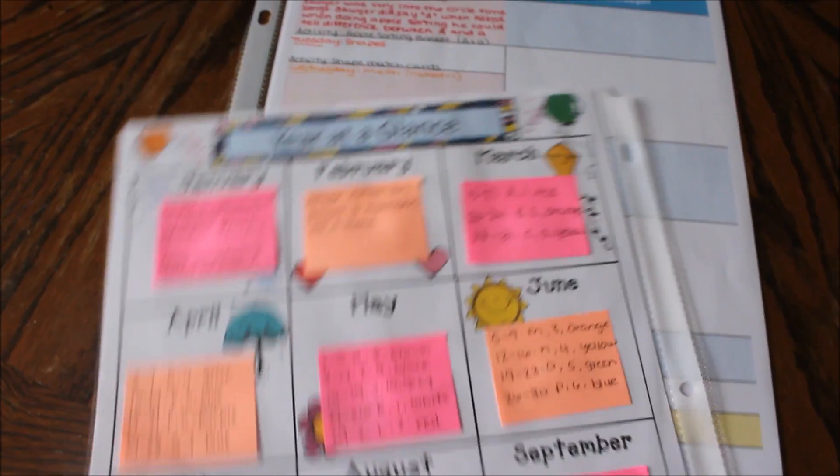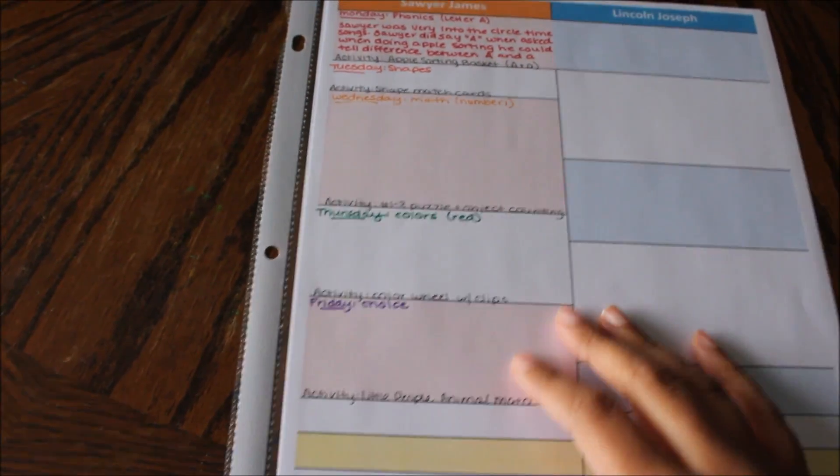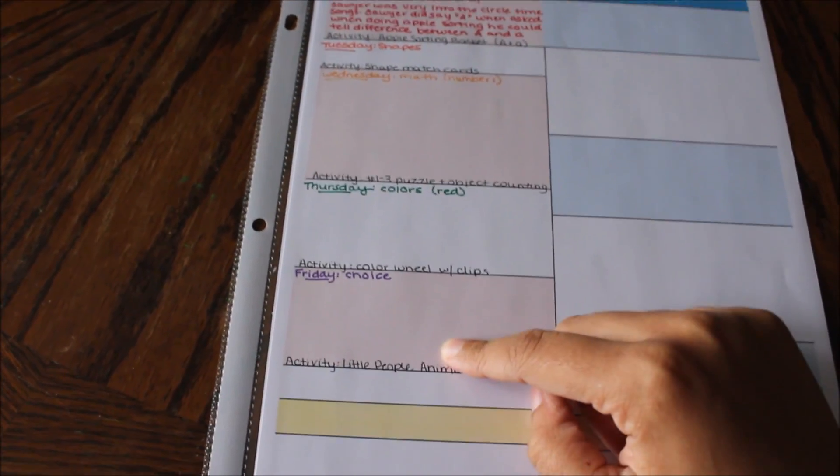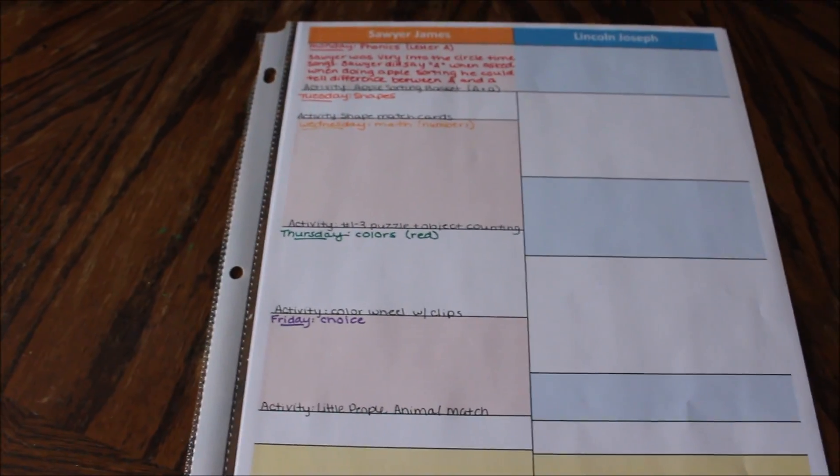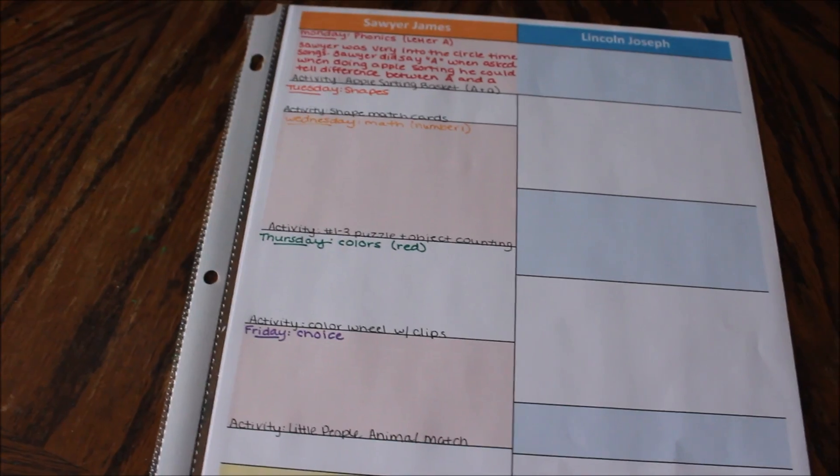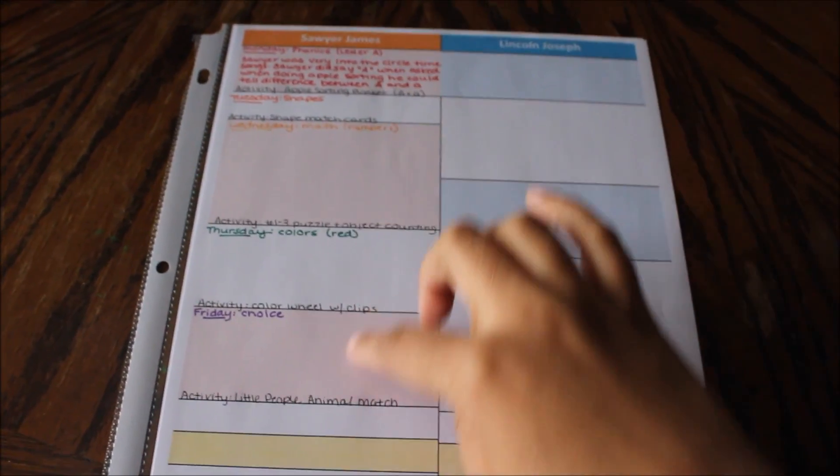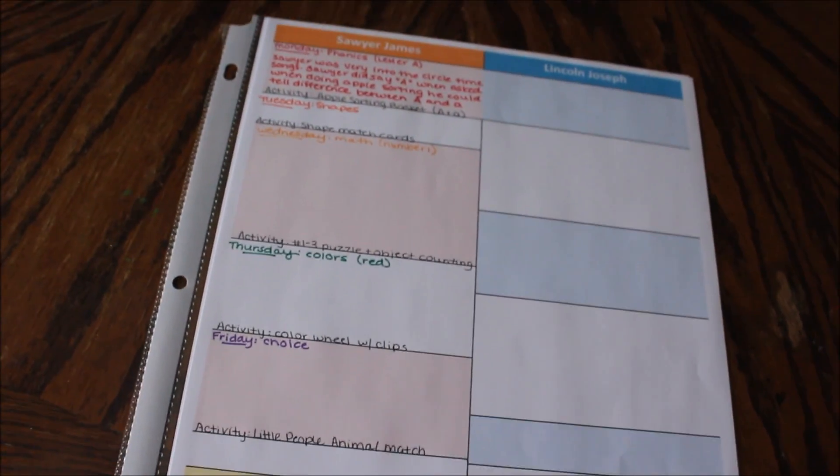So this is the actual week that I have. I only use about from here to here. Once he gets a little bit older and he has actual subjects and something more complicated where he can actually sit for longer, I'll probably use more of this, and then once Lincoln is in preschool his will start out like this.